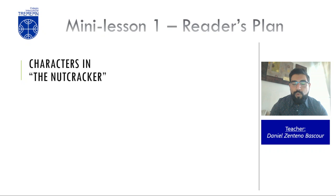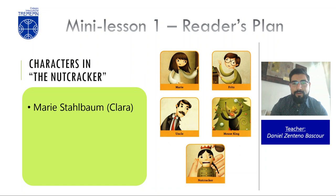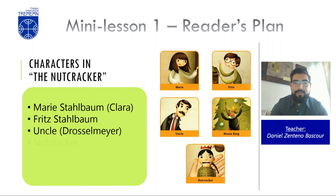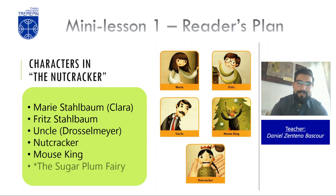Who are the characters in the Nutcracker? There are five main characters, though there are more secondary ones. The first and the protagonist is Marie Stahlbaum, also called Clara in another version. Fritz Stahlbaum is her brother. Uncle Drosselmeyer also has a very important role. The Nutcracker itself is another main character. The Mouse King is the villain, the antagonist. And sometimes the Sugar Plum Fairy is included, added in the ballet version.